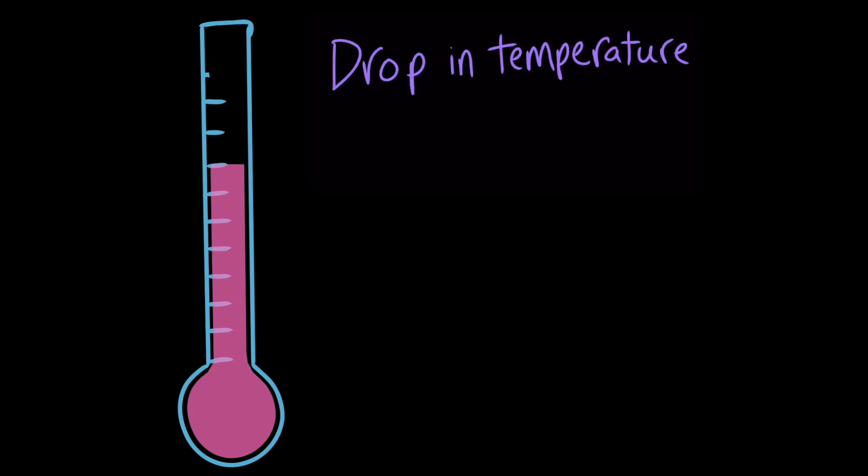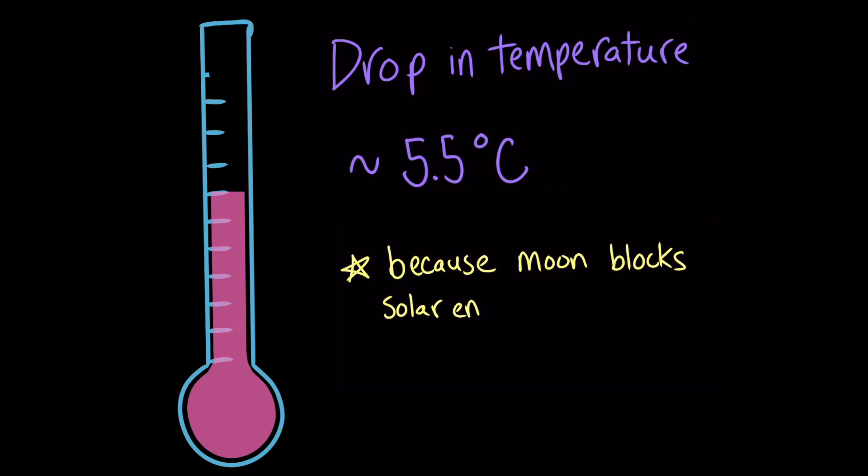If you're in the moon's shadow during a total solar eclipse, you might also notice a drop in temperature. On average, the temperature drops about 5.5 degrees Celsius during a total solar eclipse. This is because the moon blocks solar energy from reaching Earth.